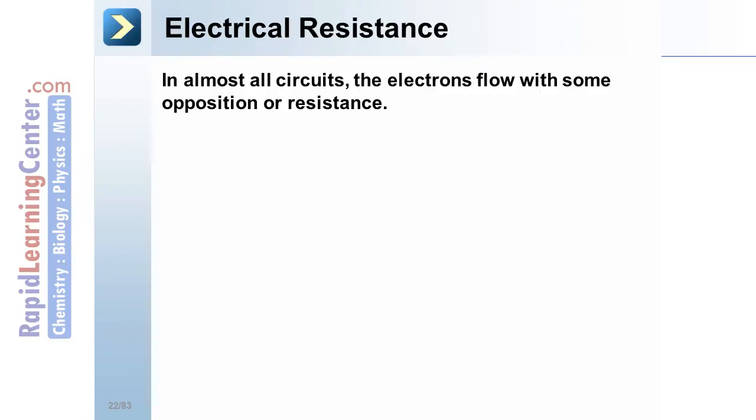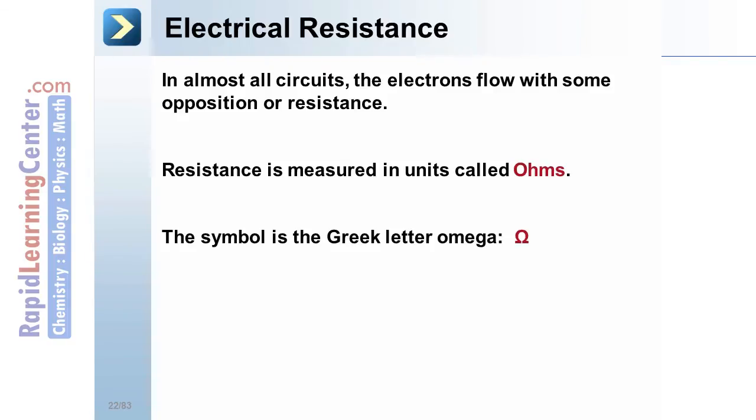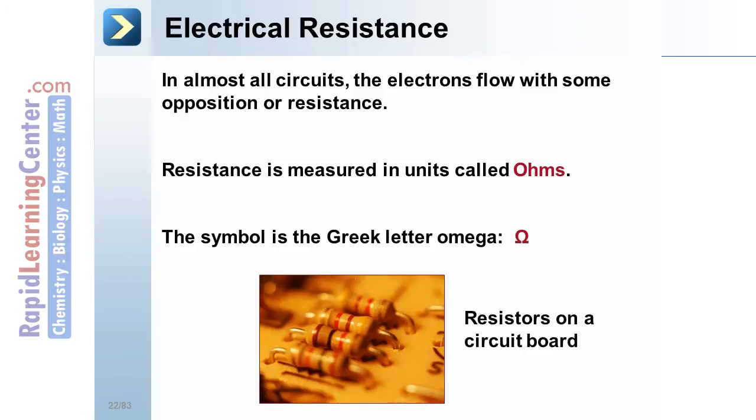Electrical resistance. In almost all circuits, the electrons flow with some opposition or resistance. This resistance is measured in units called ohms. You may recall this from a previous tutorial. The symbol for ohms is the Greek letter omega. Here are some resistors from a circuit board.